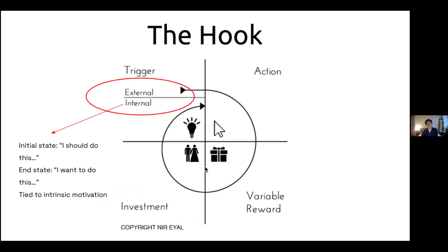If you go through this model enough times with every quadrant structured well, eventually you'll create the state of internal triggers. It starts as 'I should do this,' but eventually becomes 'I want to do this,' and that becomes true intrinsic motivation. Through this, you build a very healthy, sustainable, and engaging app over time. This model — with trigger, action, variable reward, and investment — is called the Hook Model.